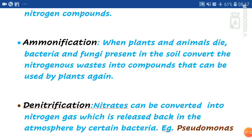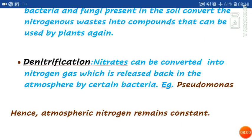When plants and animals die — that is, nitrogen first reached the plants, then the animals — the next step is denitrification. Nitrate can be converted into nitrogen gas, which is released back into the atmosphere by certain bacteria. When animals and plants are dead and decomposed, the nitrogenous compounds break down again. This is called denitrification: the conversion of nitrogenous compounds back into nitrogen gas. The nitrogen gas returns to the atmosphere, and this is why nitrogen in the atmosphere remains constant — always maintained at around 78%.